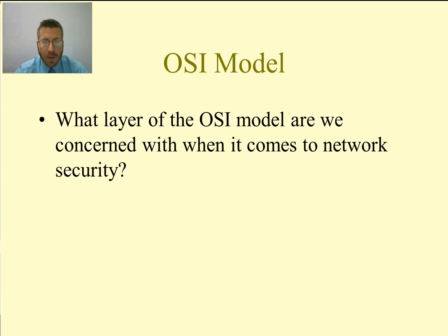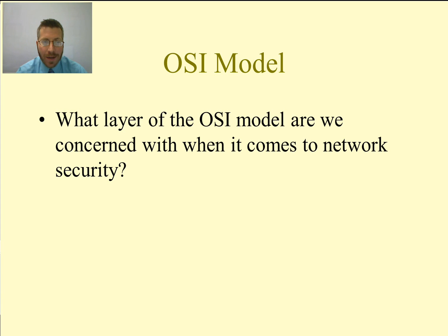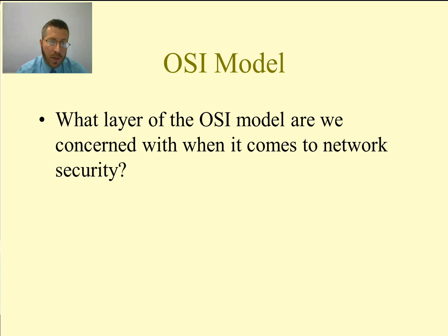One of the biggest problems with the OSI model is that it's a very good theoretical model. However, security was not thought about when the OSI model came into existence. So all of the security measures that we have are actually put onto individual layers after the model was completely designed. So we do have security built into the application layer, layer 7. We have HTTP, the Hypertext Transfer Protocol at layer 7.